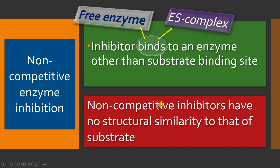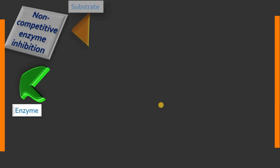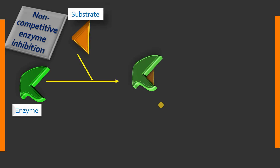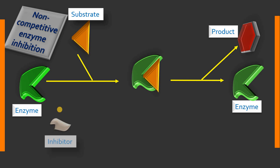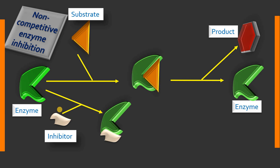Their structure is not similar to the substrate. To explain the non-competitive enzyme inhibition mechanism: normally, a substrate binds to the enzyme and forms an enzyme-substrate complex, which then gives enzyme and product. You may notice that the enzyme also has another binding site other than the active site — sometimes called the allosteric binding site, which we will discuss further when we cover enzyme regulation. A non-competitive inhibitor can bind to the pre-enzyme and forms an enzyme-inhibitor complex.